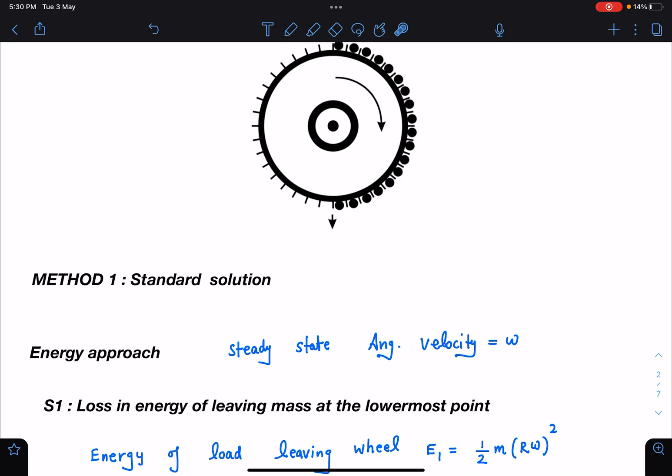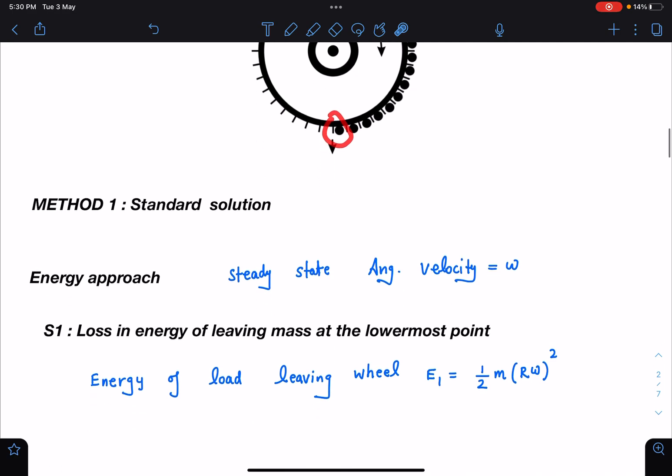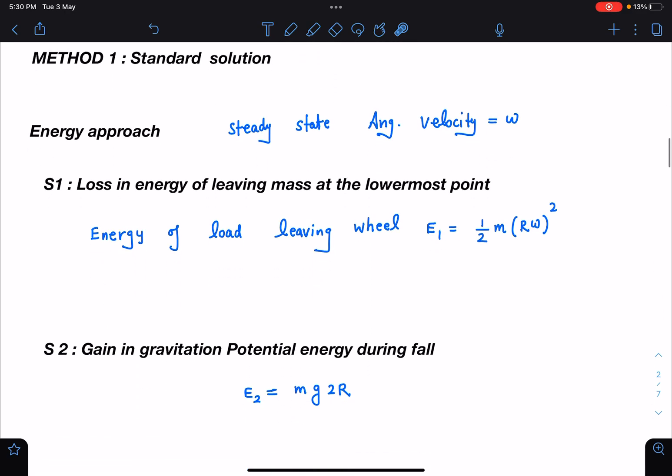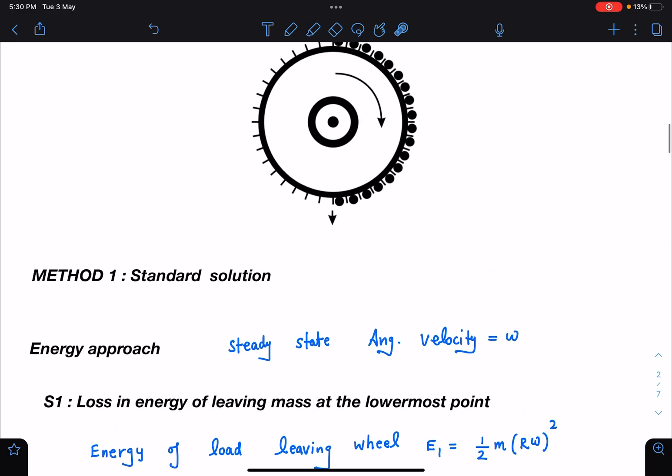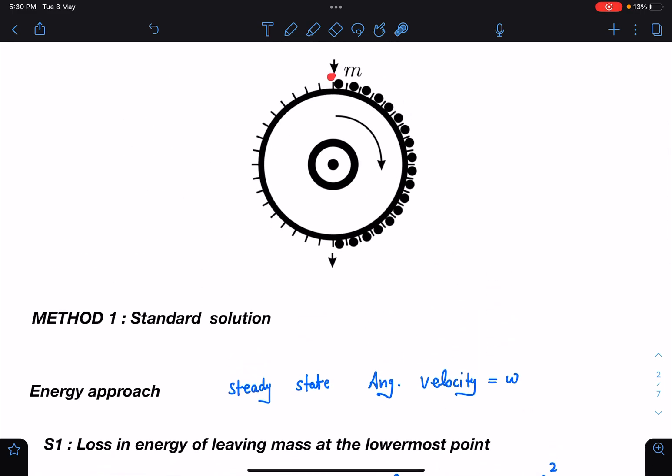Now loss in energy of leaving mass, simply I can say it is the kinetic energy of this. So I am writing this part as half m v tangential square, that is R omega whole square. The second step is gain in gravitational potential energy during the fall. You can see the moment this mass is entering here and it goes all the way from here to here, and then it is leaving like this.